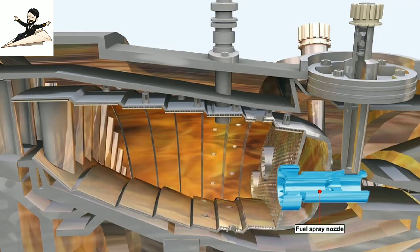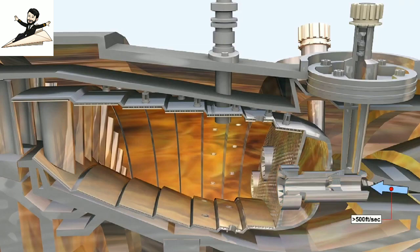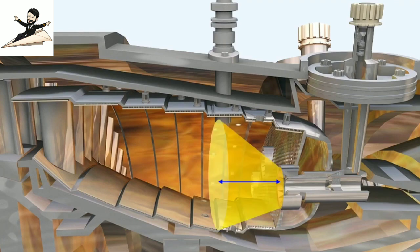The very high combustion efficiency attained in modern gas turbine engines is due in no small part to the fuel spray nozzles used in them. These nozzles have the task of atomizing or vaporizing the fuel to ensure it is completely burnt. This is no easy undertaking considering the velocity of the airstream from the compressor and the small distance available within the chamber for combustion to occur.